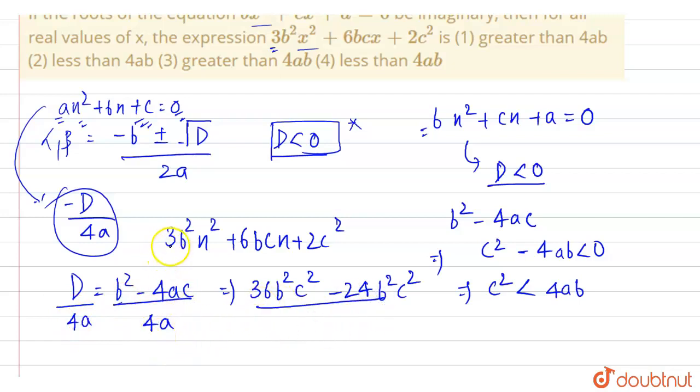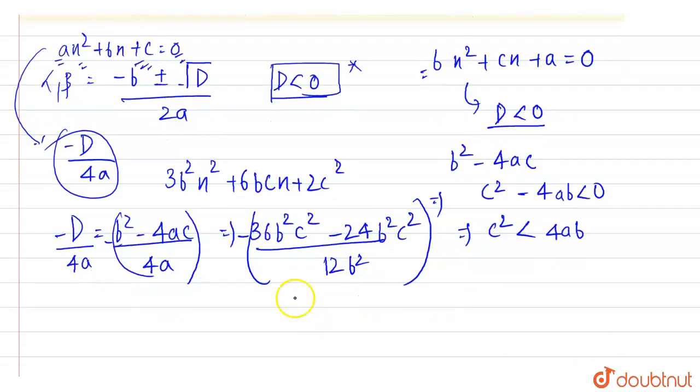So 4 into 3, so 12b square. So this minus 4ac, so we have negative sign to this whole. So evaluating this, we have this as negative 36 minus 24, so this is 12b square c square by 12b square.